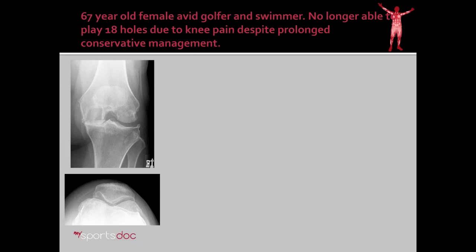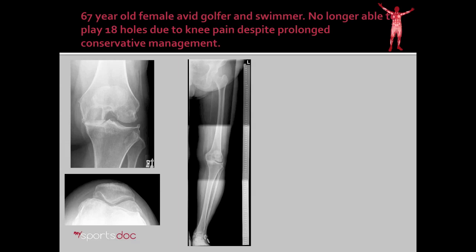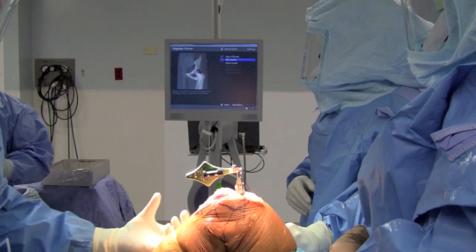Here's our case presentation: a 67-year-old female, avid golfer and swimmer. She's no longer able to play 18 holes of golf due to persistent pain in the knee, and she's also failed conservative management such as injections and bracing. Here you see the two x-rays shown previously, and here's an additional preoperative x-ray which is very important — the alignment view. You can see that over the years, as she's lost cartilage on the inside of the knee, she's fallen into an abnormal bowed appearance of the lower extremity. Typically, a line drawn from the center of the femoral head to the center of the ankle should pass through the center of the knee in normal anatomy. Hers has moved to the inside of the knee, indicating a bowed deformity, which we aim to correct during her knee replacement surgery.